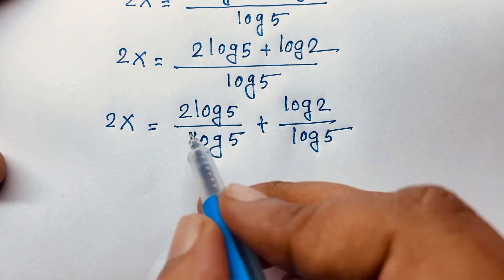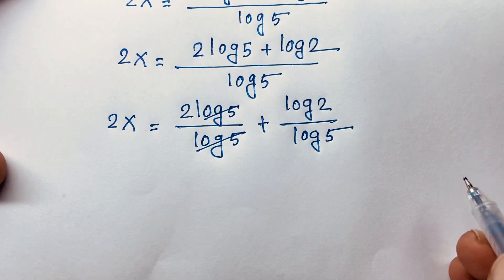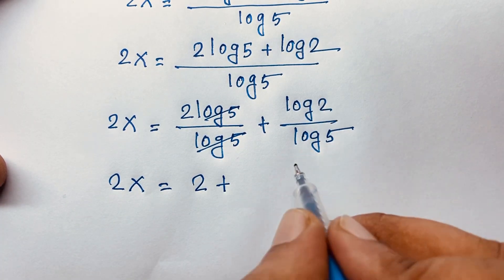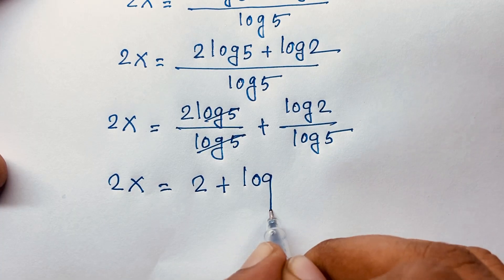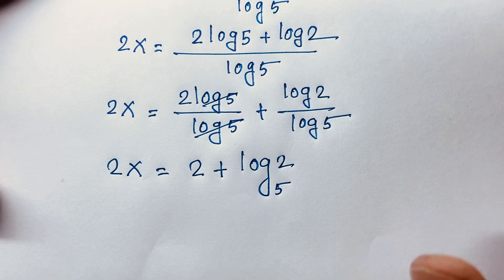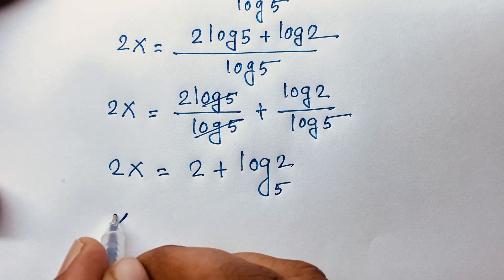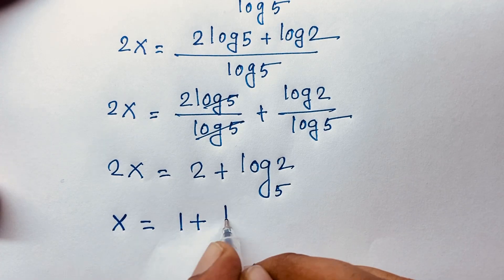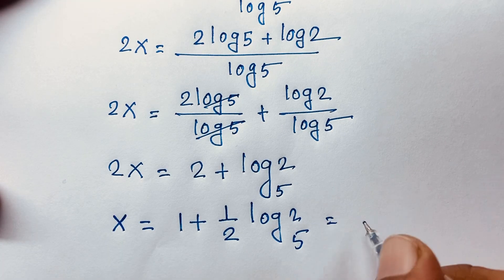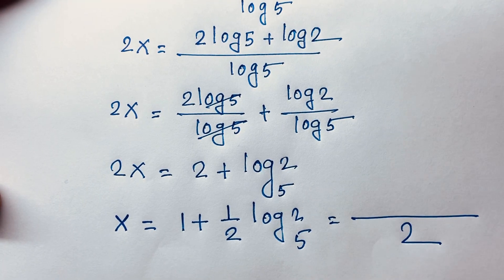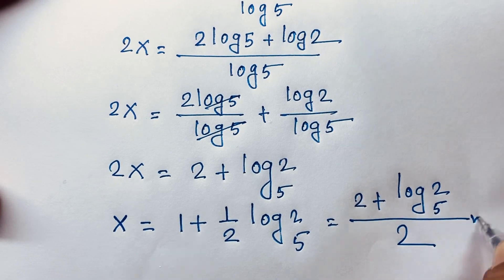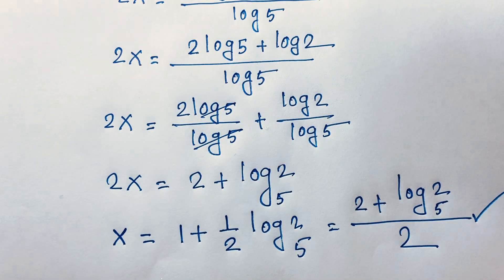Now log 5 over log 5 cancels out, and we find out 2x is equal to 2 plus log 2 over log 5. According to the change of base rule, log 2 over log 5 is log base 5 of 2. Dividing both sides by 2, x equals 1 plus one-half times log base 5 of 2.